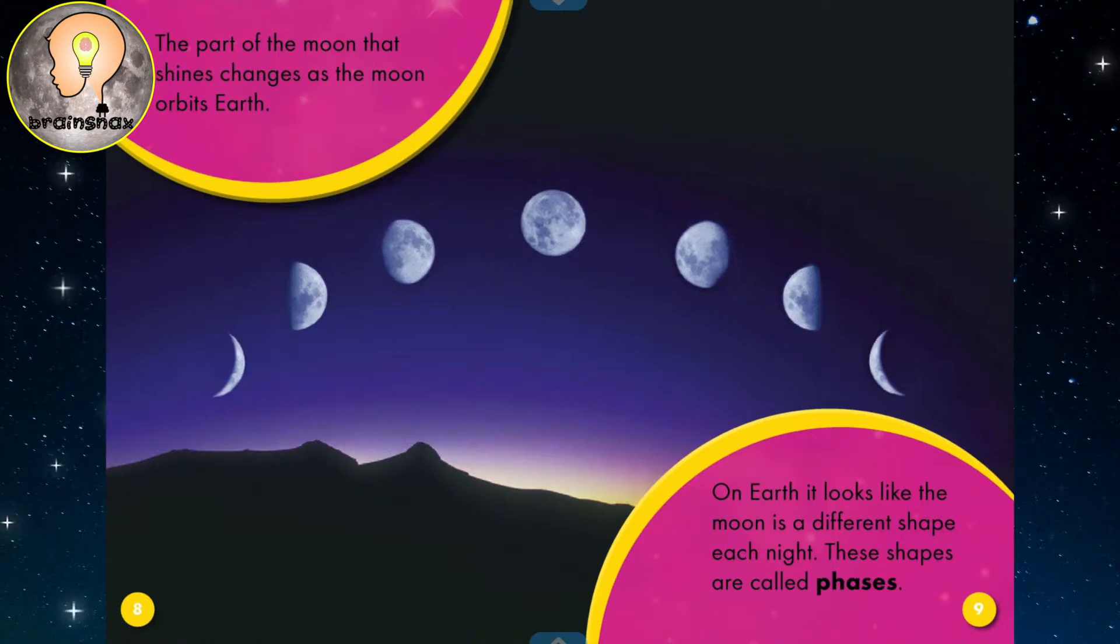On Earth, it looks like the moon is a different shape each night. These shapes are called phases. So these are the phases of the moon.